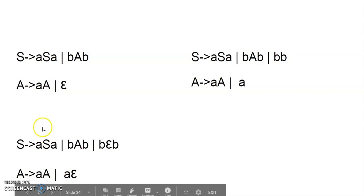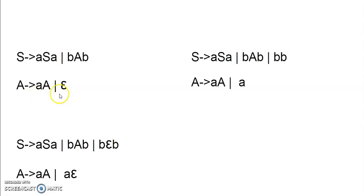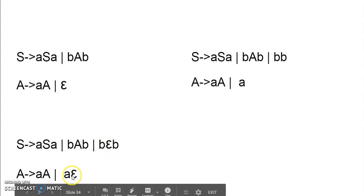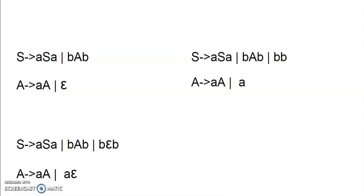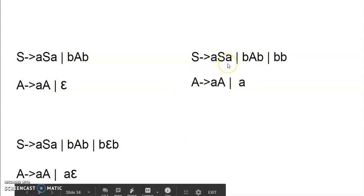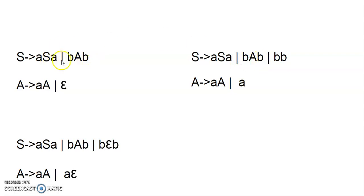Another example: S produces ASA | BAB, and A produces AA | epsilon. Here A is producing epsilon. Wherever we have A, we put epsilon there — we have A here and A here. Keep the production as it is and add more productions with epsilon substituted. Our final answer: S produces ASA | BAB from before, and the new productions with epsilon give BB. Similarly in AA, keep the previous production and add a production which is the result of substituting epsilon. I hope removal of epsilon production is clear.